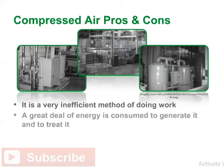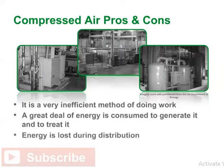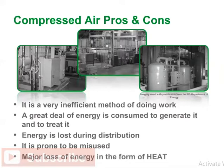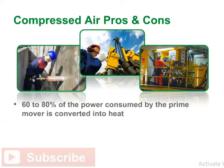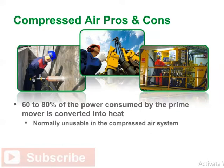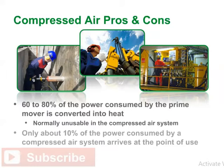A great deal of energy is consumed to generate compressed air and to treat it to achieve the desired temperature and dryness. Some of the energy is then lost in the process of distribution to friction and normal pressure drop. Compressed air is also prone to misuse, but the major inefficiency is energy rejected in the form of heat. 60 to 80% of the power consumed by the prime mover is converted into heat, which is normally unusable. Taking all the losses into account, only about 10% of the power consumed by a compressed air system arrives at the point of use.